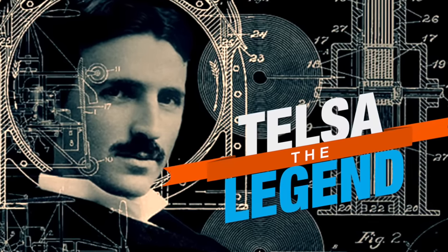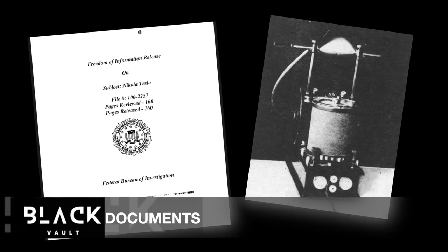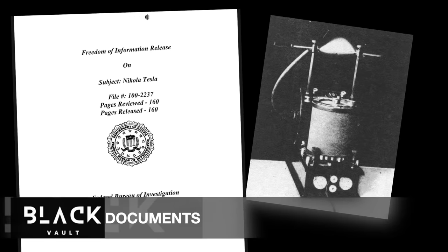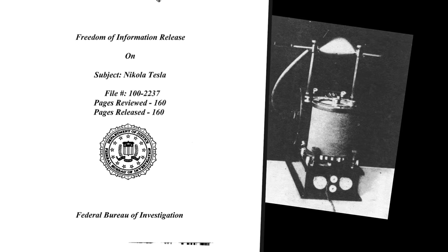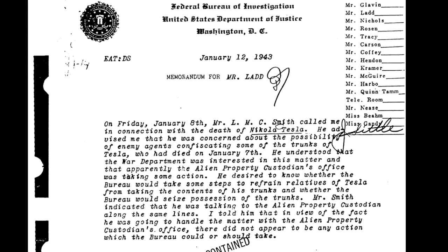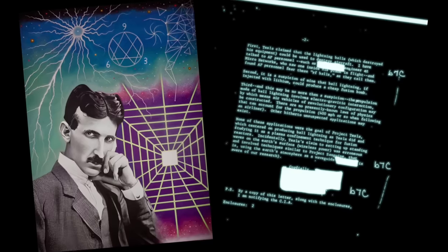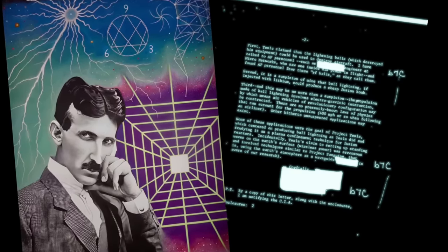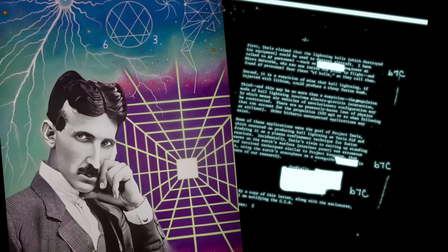But one interesting way to dig into the death ray is to ask: after Tesla died, what happened next? The Black Vault recently published everything the FBI have on Tesla. In these documents, it clearly states that there was a Department of Defense interest in his inventions. A memorandum notes that on Friday, January the 8th, Mr. L. M. C. Smith called in connection with the death of Nikola Tesla. He advised that he was concerned about the possibility of enemy agents confiscating some of Tesla's trunks, who had died on January the 7th. He understood that the War Department was interested in this matter, and that apparently the Alien Property Custodian's Office was taking some action.